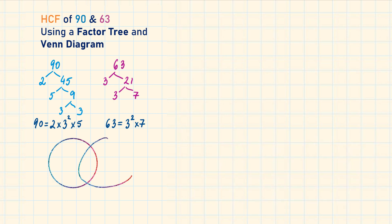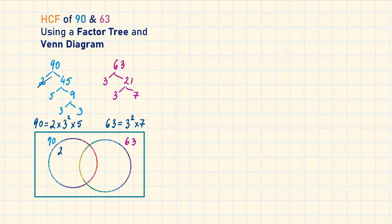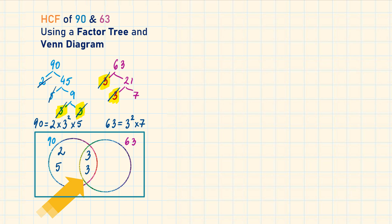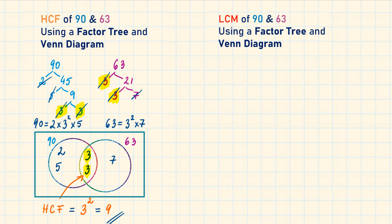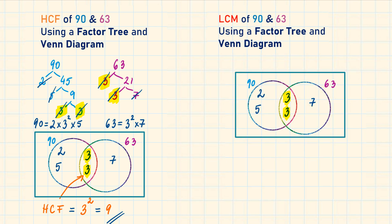Let's construct the Venn diagram. The 2 and 5 can only be found under 90, so we write them in the 90 section. The two 3s are common to both 90 and 63, so we write them in the overlap section. And 7 only belongs to 63. The numbers in the intersection represent the HCF. To find the LCM, we multiply every number in the Venn diagram: 2 × 5 × 3² × 7, which equals 630.